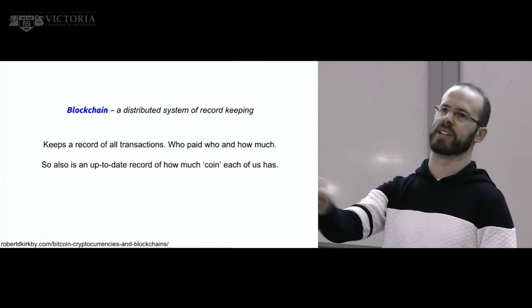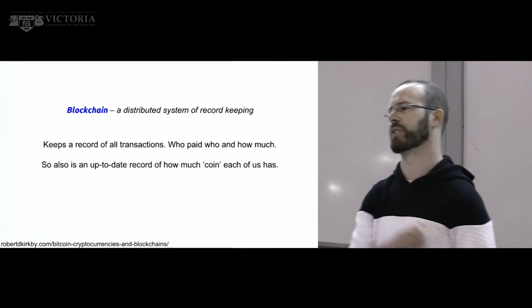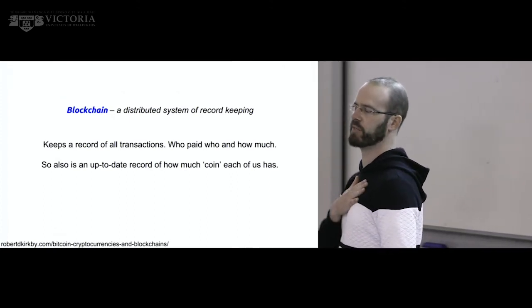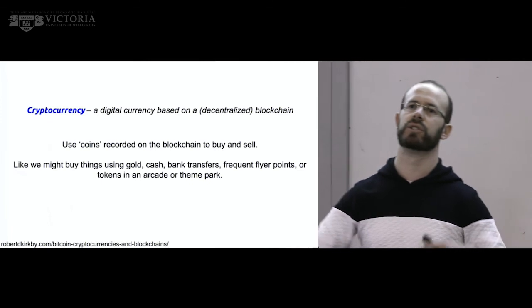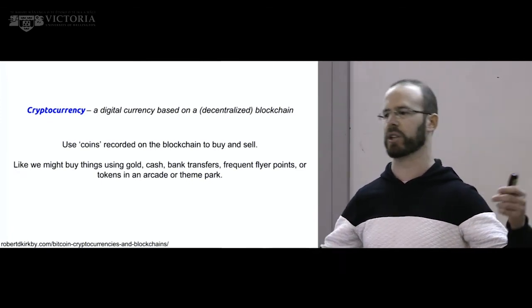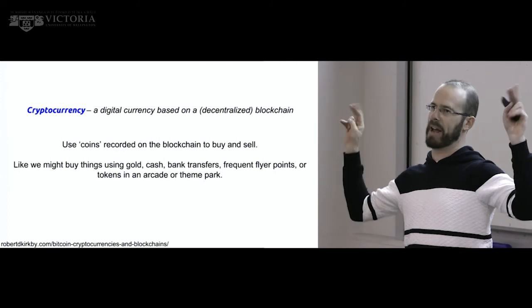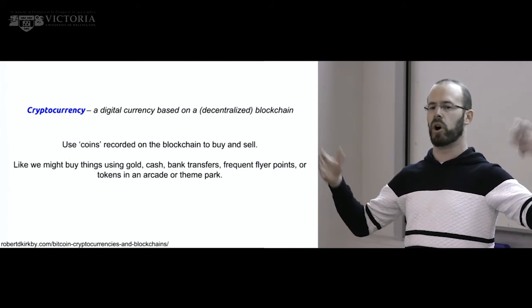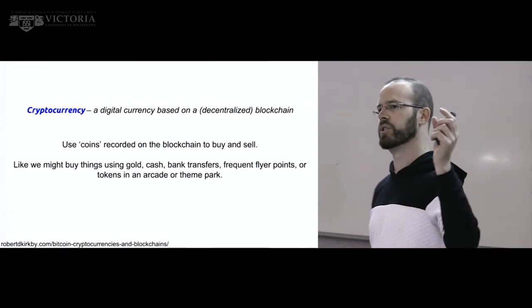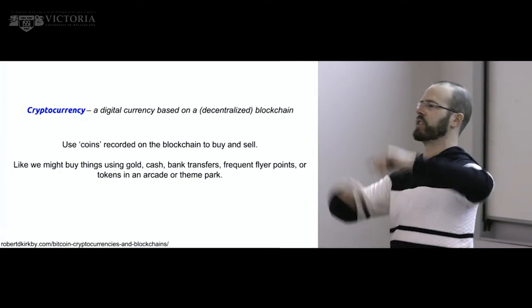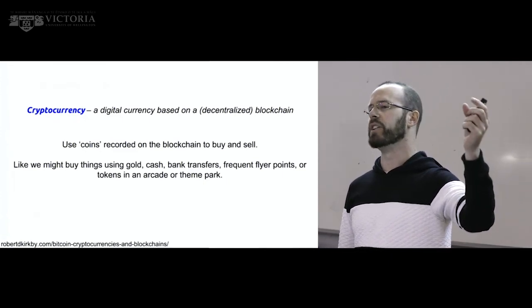What you get at the end, if you've got a record of every single transaction everyone has ever made, is you also have a record of how much coin we all have. If I transfer two coins to you, the record now shows I've got no coin and you've got two. With cryptocurrencies, any blockchain we create can have coins or tokens — all transactions are tracked, and so are all of our account balances. We can transfer them to buy and sell things, making sure no one is double-spending or copying tokens. Blockchain solves that for us.